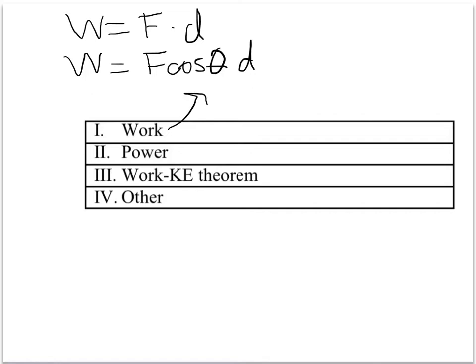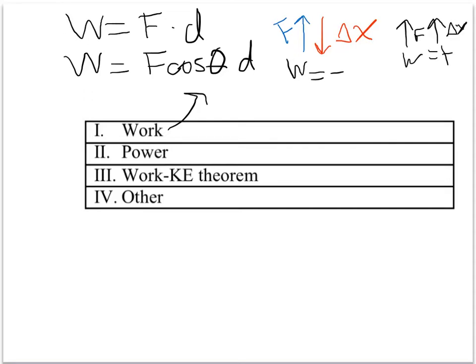You should also be able to find the sign of work. So let's say force is up and displacement is down — force and displacement are in opposite directions, so work is negative. If the force and the displacement are in the same direction, the work is positive. And if the force and the displacement make a right angle, there is zero work done.